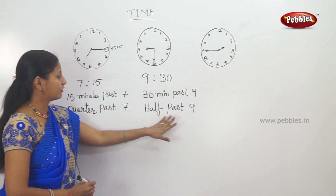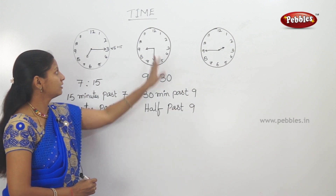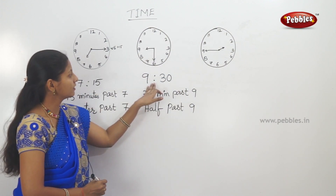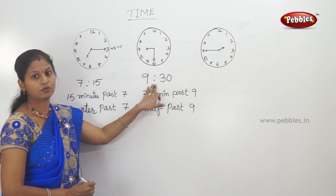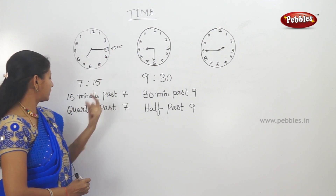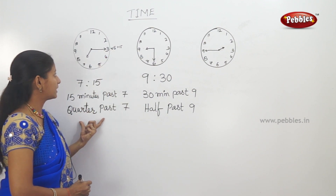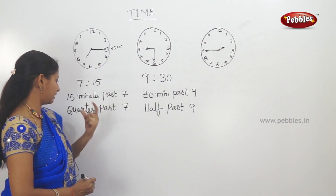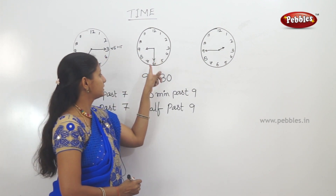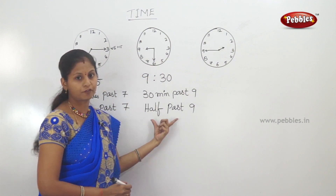Half past 9, 30 minutes past 9 — the time is 9:30. So, minute hand at 3 is quarter past, and minute hand at 6 is half past 9.